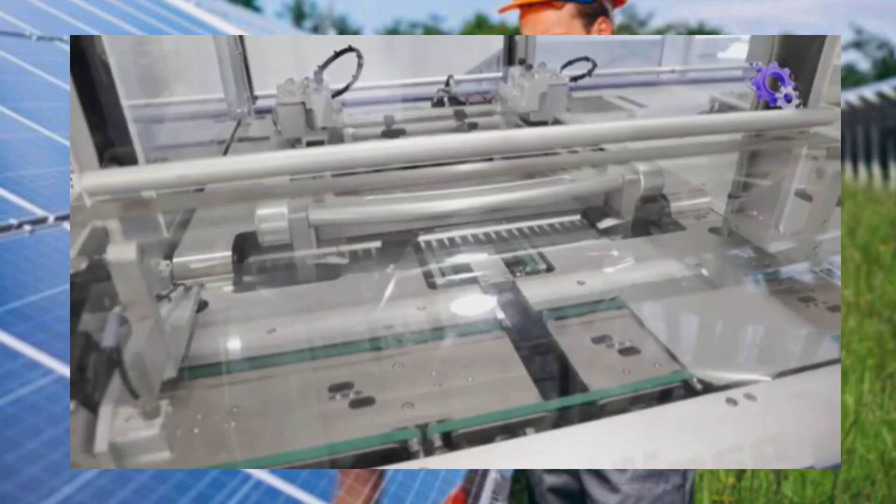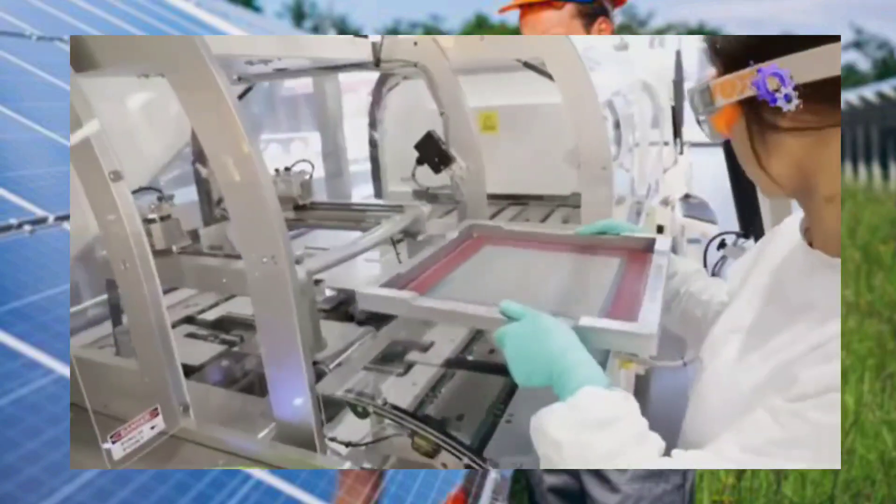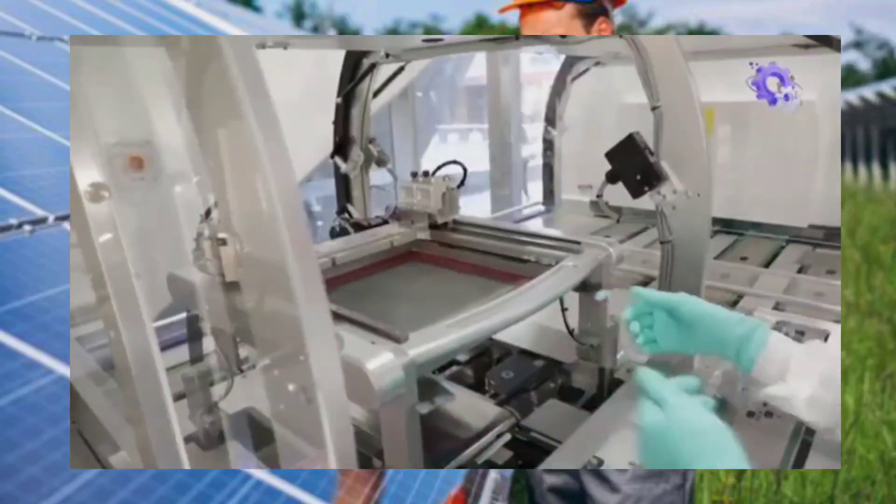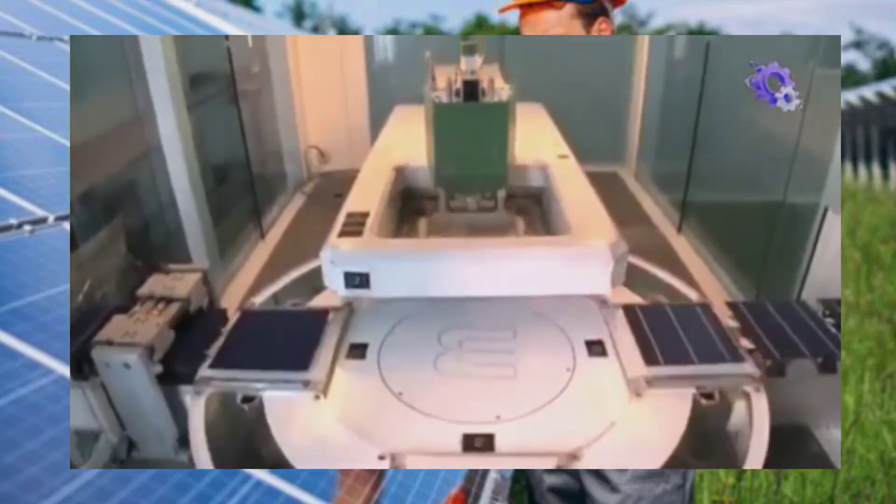In the next step, each wafer is processed into a solar cell, capable of converting sunlight into electricity. Metal conductors, typically made of silver or aluminum, are screen printed onto the wafer to create a grid-like matrix, ensuring uniform distribution of electrical current.